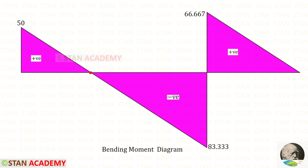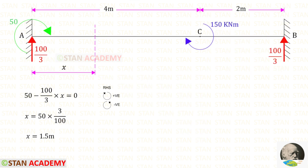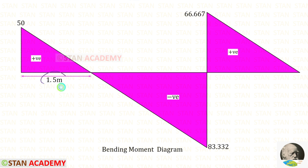At the point of contraflexure the bending moment is zero. Making a section at a distance X from point A, we can write the bending moment expression and set it equal to zero to find X. Applying that condition gives us the location of the point of contraflexure. Now we are going to end this session. Thank you for watching this video.